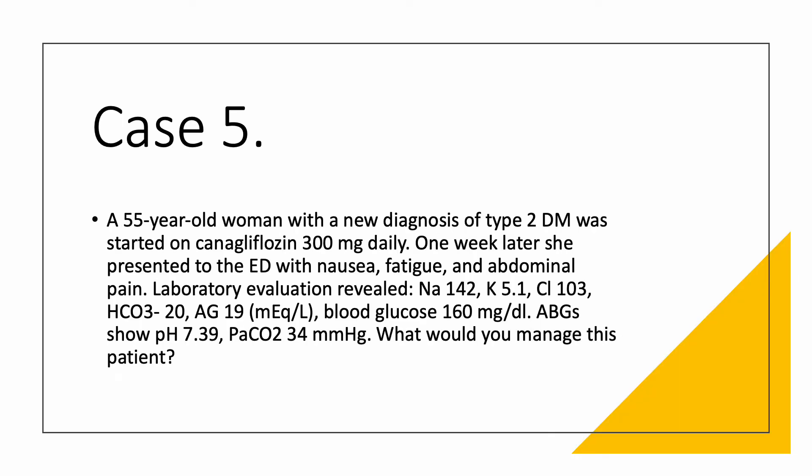Case number five. A 55-year-old woman with a new diagnosis of type 2 diabetes mellitus is started on an SGLT2 inhibitor, canagliflozin. There are three SGLT2 inhibitors: canagliflozin, empagliflozin, and dapagliflozin. They are indicated for patients with chronic kidney disease and proteinuria, for CHF, and they help with diabetes. One week later, the patient presents to the emergency department with nausea, fatigue, and abdominal pain.